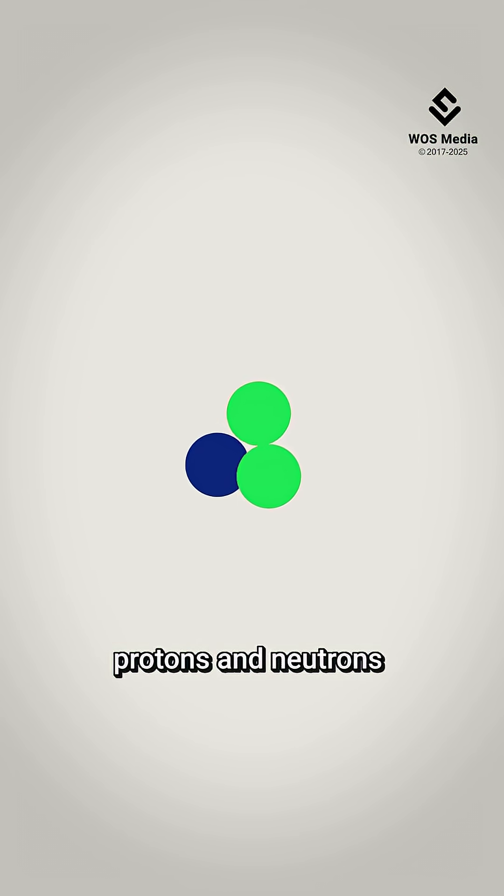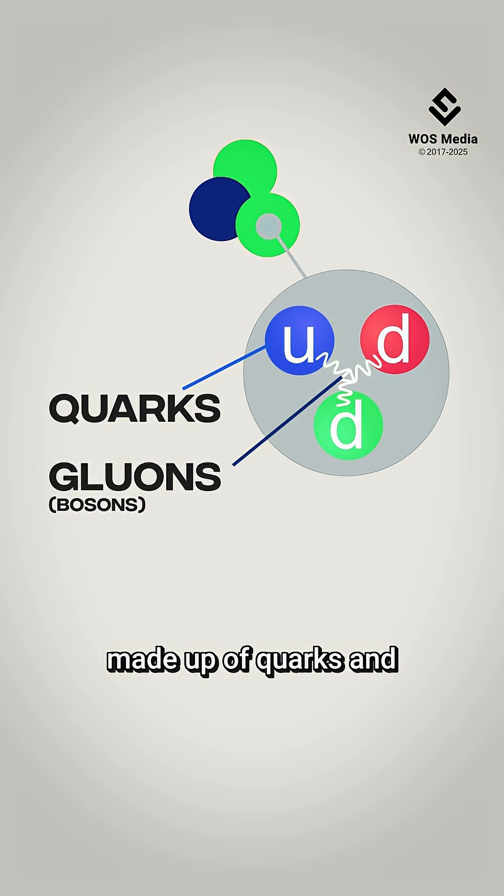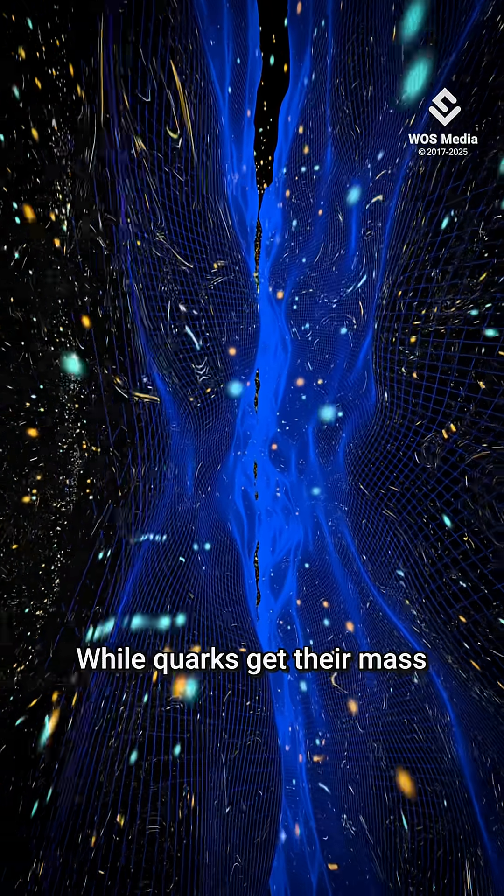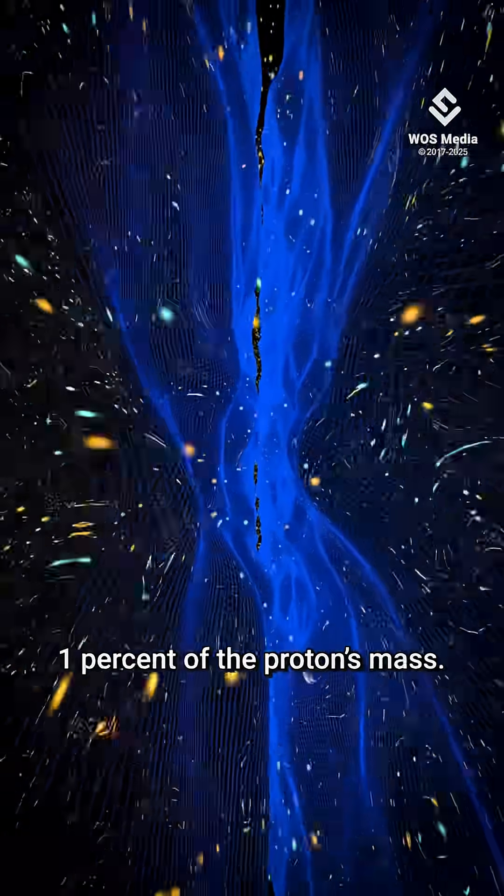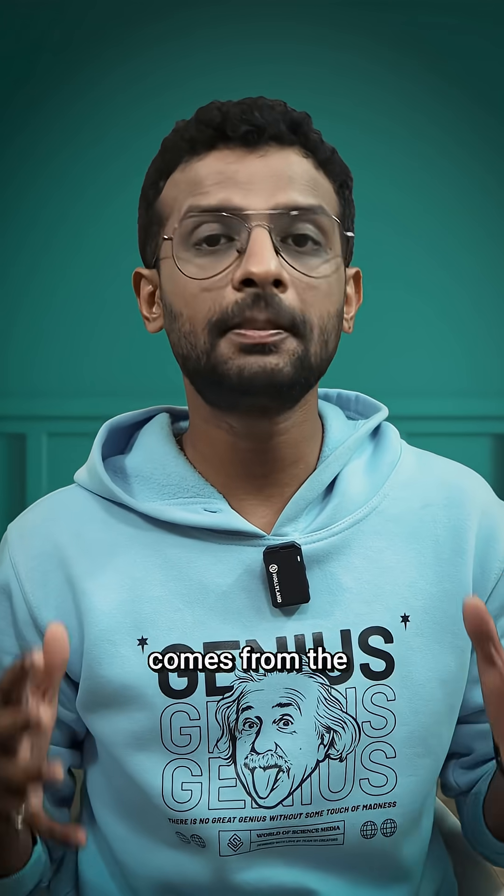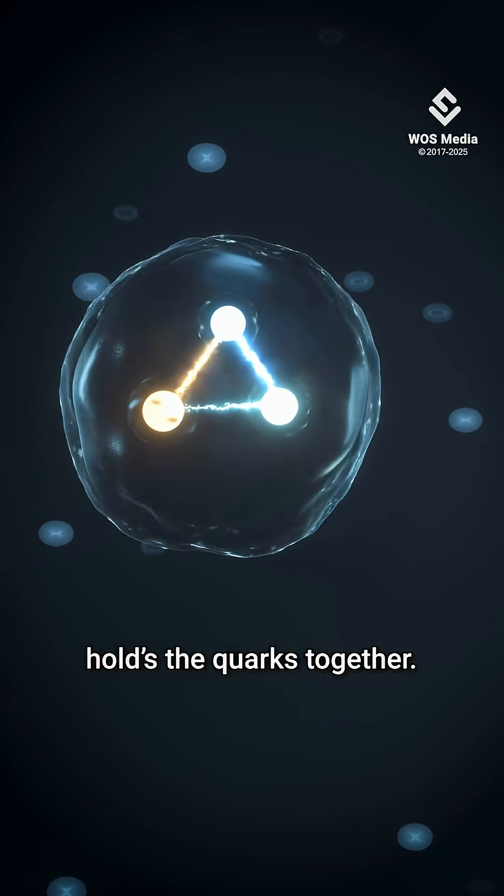So now we're left with protons and neutrons, which are further made up of quarks and gluon bosons. While quarks get their mass from the Higgs mechanism, this accounts for only 1% of the proton's mass. The remaining mass comes from the binding energy that holds the quarks together.